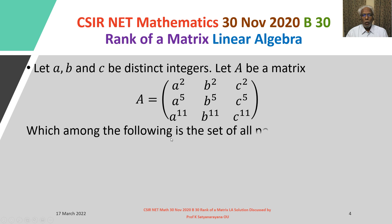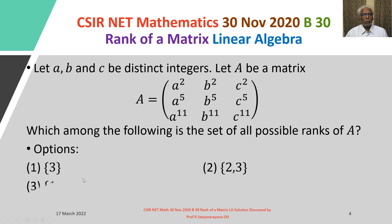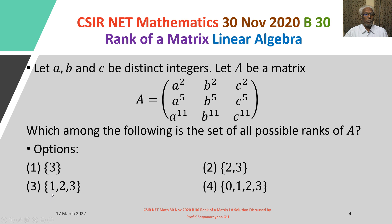Which among the following is the set of all possible ranks of A? Option 1: the set consisting of 3 alone. Option 2: the set consisting of {2, 3}. Option 3: the set consisting of {1, 2, 3}. Option 4: the set consisting of {0, 1, 2, 3}.